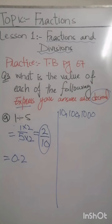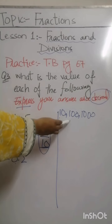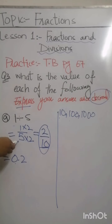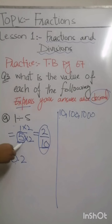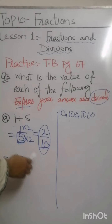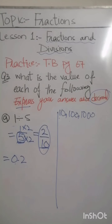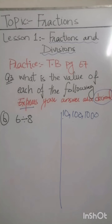Since the denominator is now 10, we have two tenths, so the decimal is 0.2. To summarize: to convert any fraction to a decimal, make the denominator 10, 100, or 1000 by finding an equivalent fraction. Here, the denominator 5 was made into 10 by multiplying numerator and denominator by 2, giving 2 by 10, which equals 0.2.